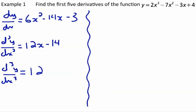Move on to find the fourth derivative, d to the fourth y by dx to the fourth. This is now the derivative of the third derivative, derivative of 12, which is 0.